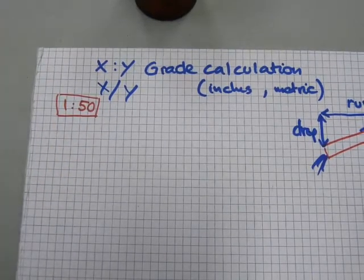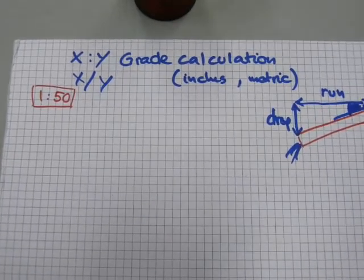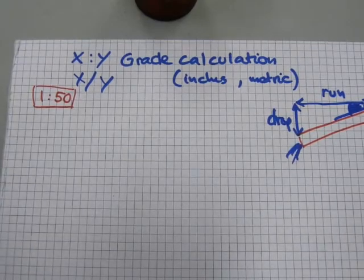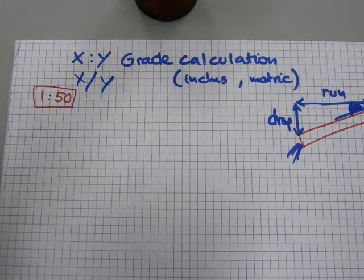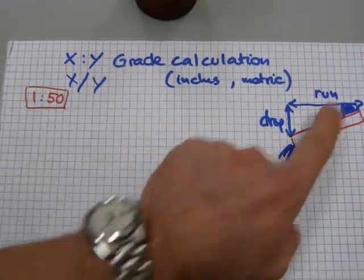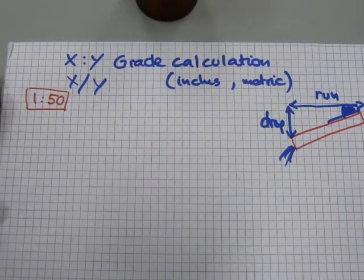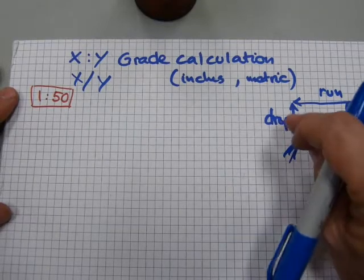No, no such stickers on a blueprint. So you have to know what you're looking at. Typically, in grade calculations, there's three pieces of information that's used. Grade, drop, and run. Usually two of them given, third one to be calculated.